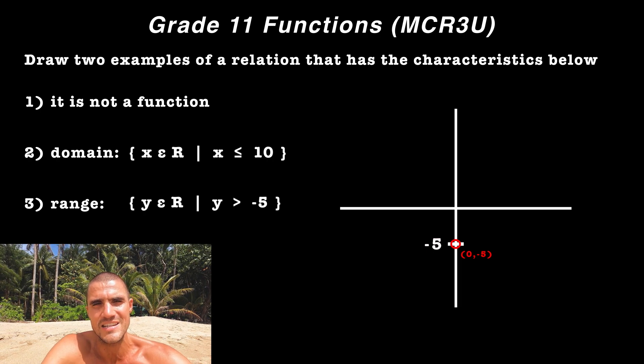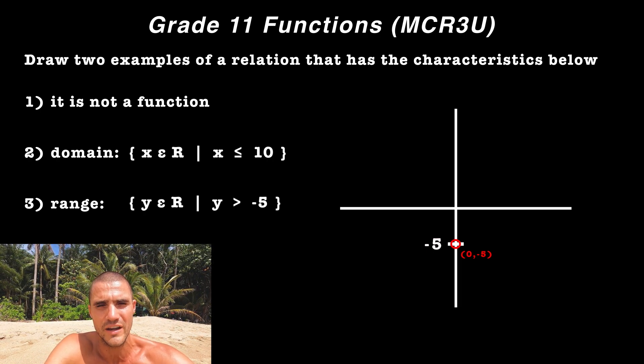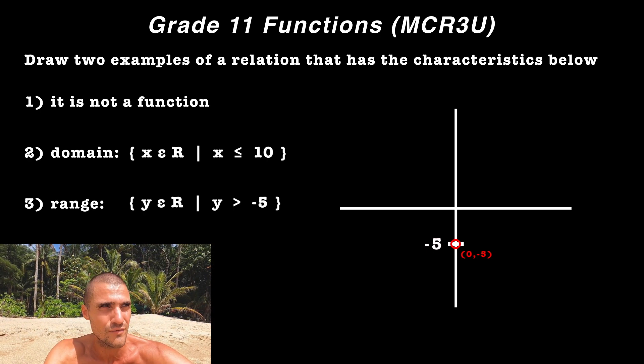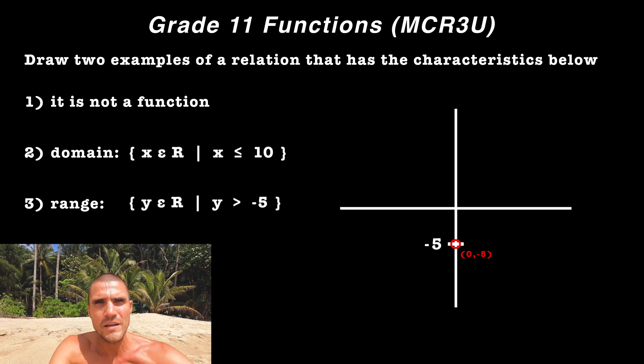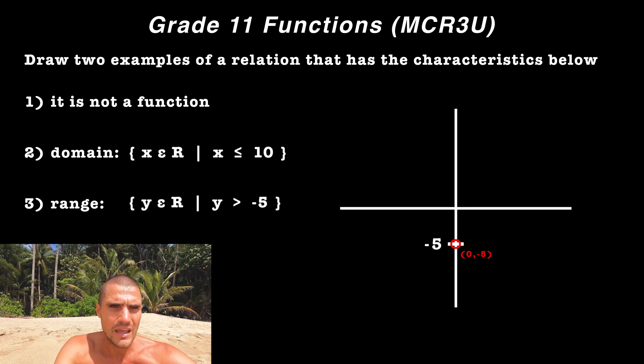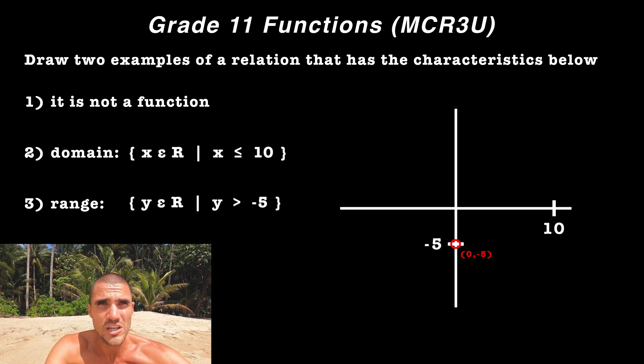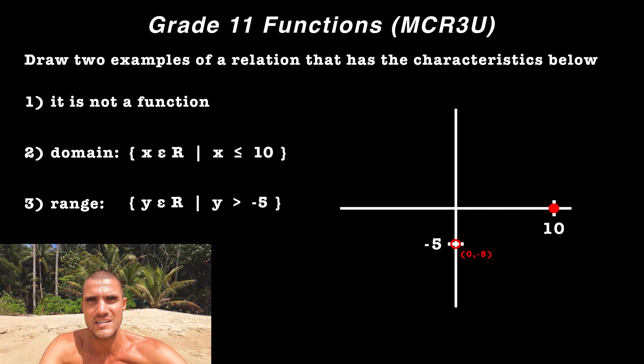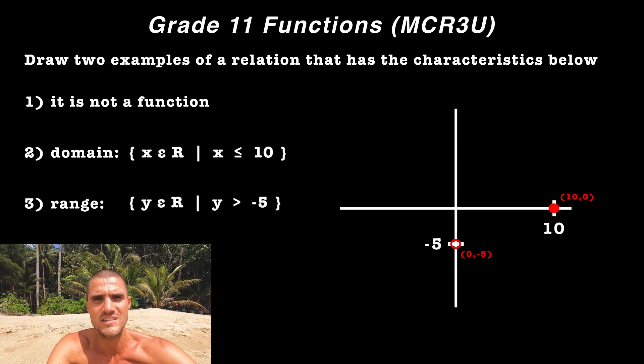And let's make sure that it's a hole because it can't include a Y value of negative five because it's greater than negative five, not greater than or equal to negative five. And then because the domain is X ≤ 10, let's put a solid dot on the X axis at 10 and zero.